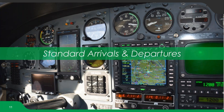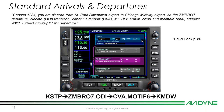The first scenario is on page 86 of the Bauer book. You're on the ground at St. Paul Downtown airport (KSTP) flying to Chicago Midway (KMDW). ATC clears you via the Zimbro 7 departure, Nodine transition, direct Davenport, Motif 6 arrival, climb and maintain 5,000 feet, squawk 4321, expect runway 27 for departure.